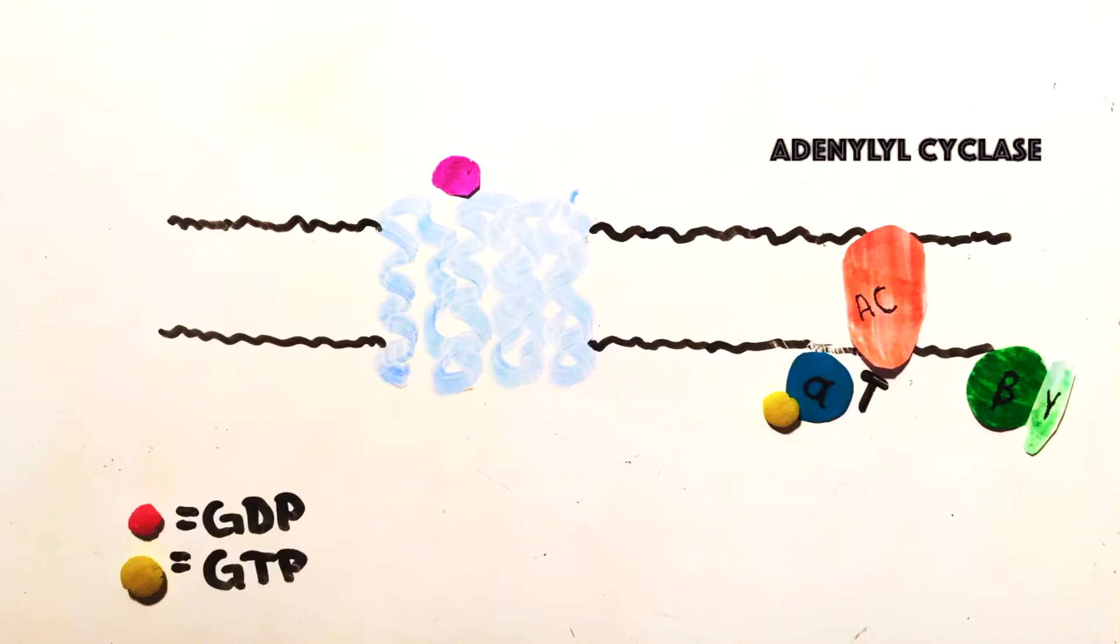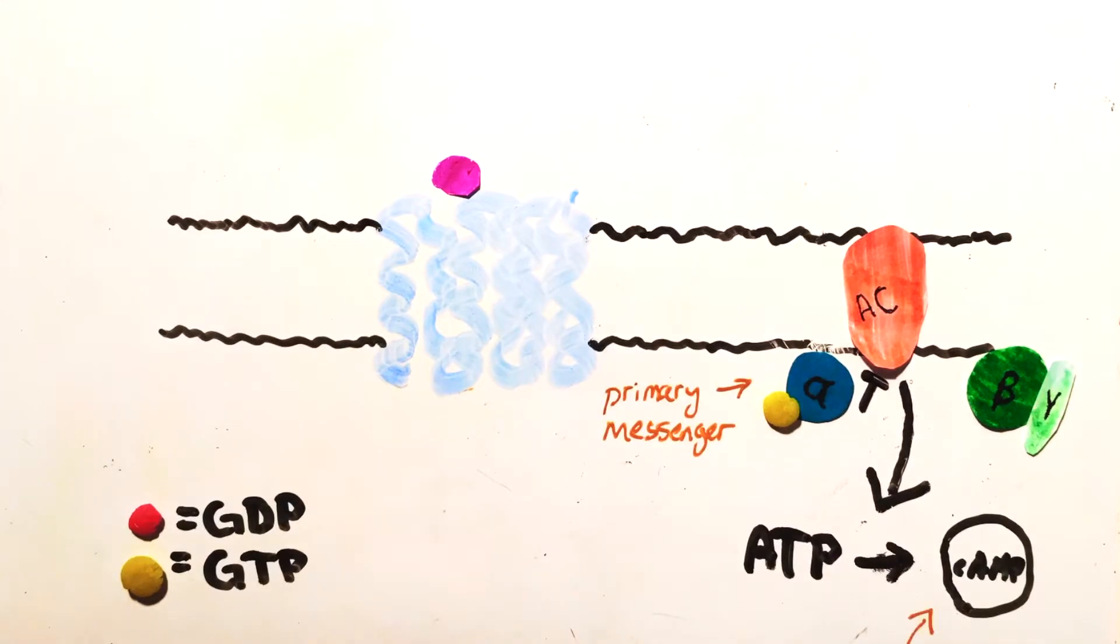For example, alpha interacts with adenylyl cyclase and the alpha protein can stimulate or inhibit based on the type. This enzyme uses ATP to produce cAMP. cAMP is the secondary messenger which is involved in many different responses. An opioid can use this mechanism to inhibit this enzyme and then prevent pain signals.